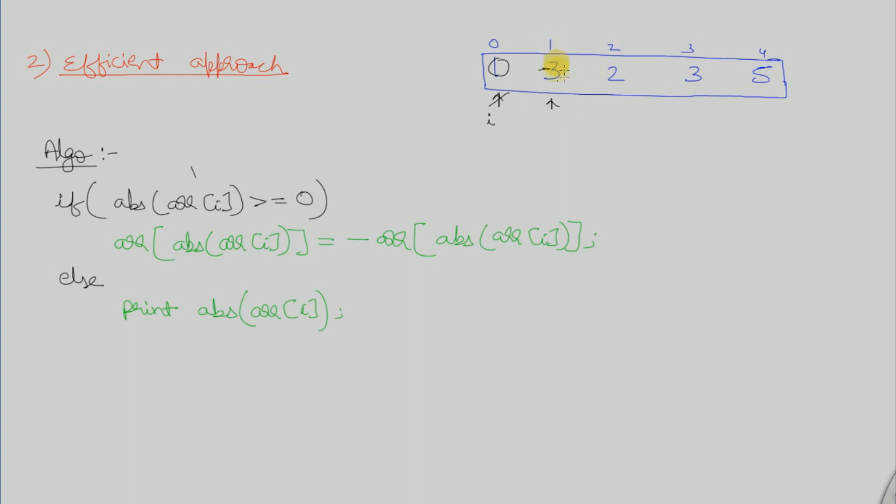At index 1, the absolute value of this element, which is -3, is 3. At index 3, we have a positive element greater than or equal to 0, so we make it negative and move to the next element.